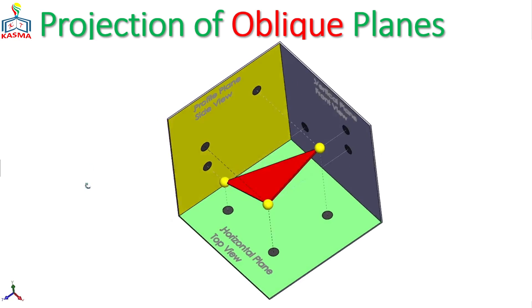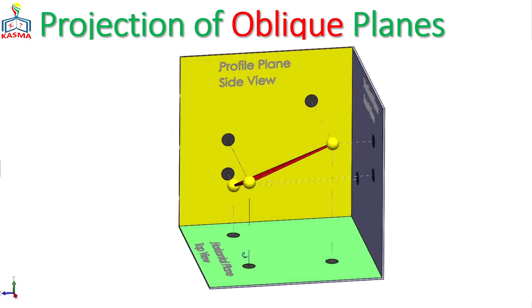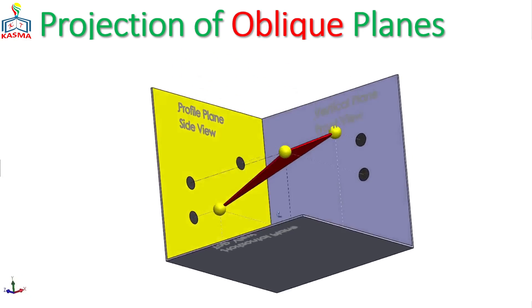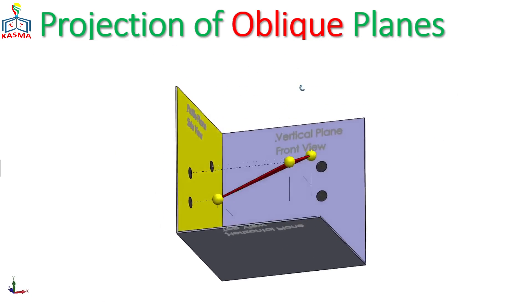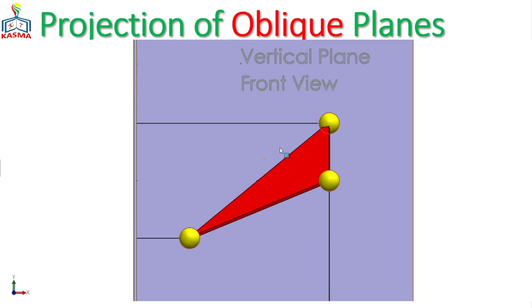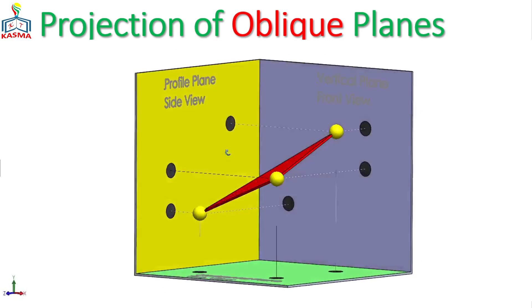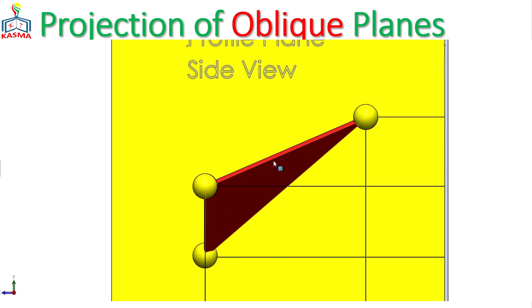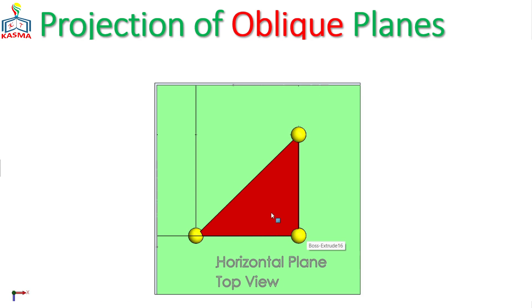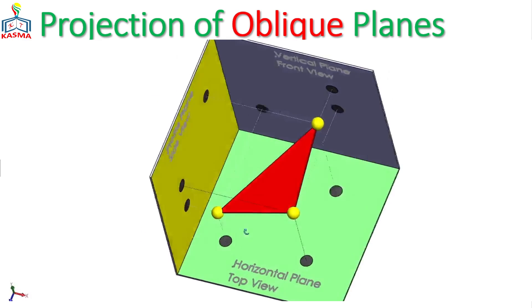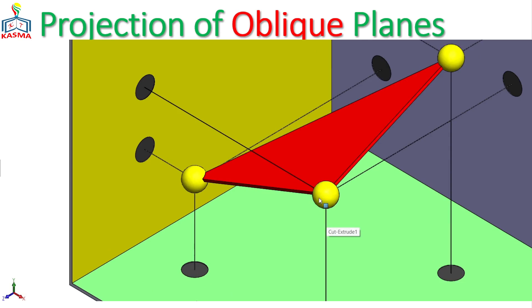Looking at this animation, this plane is not parallel or perpendicular to either of the three planes. If you rotate it, you can see that this plane makes an angle other than 0 or 90 degrees with the other planes — meaning it is inclined to all three principal planes. From the front side, this plane will have a foreshortened projection on the vertical plane. From the side view, it will have a distorted shape on the profile plane. From the top, you will get a foreshortened plane on the horizontal plane.